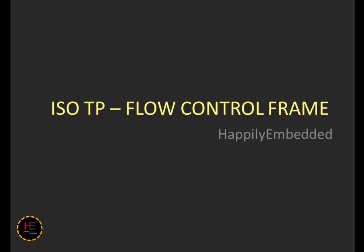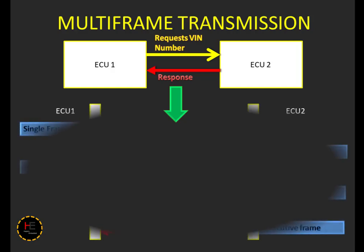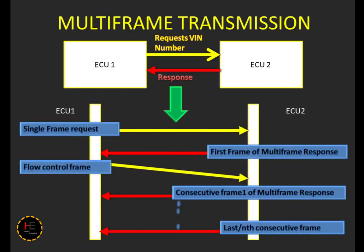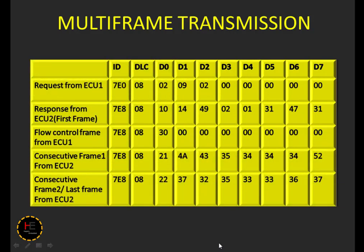Hi friends, welcome to Happily Embedded. In my previous video I explained about CAN multi-frame transmission — when we need to send longer CAN messages, we use CAN multi-frame, which has a first frame, flow control frame, and consecutive frame. In this video we are going to learn about the flow control frame, flow status, block size, and separation time minimum.